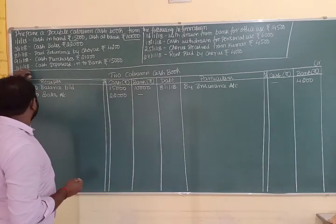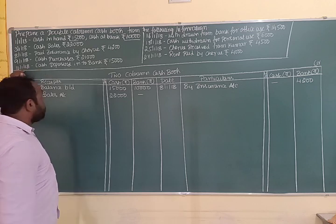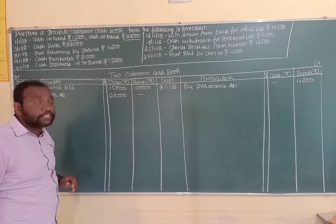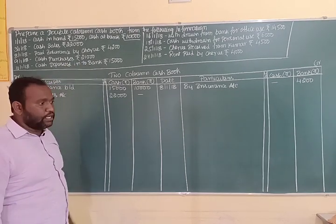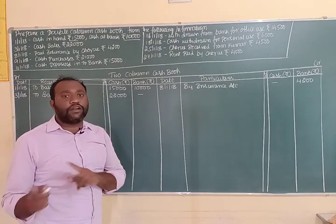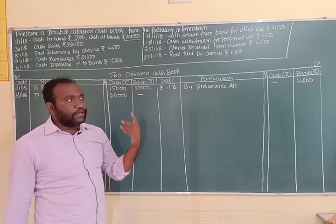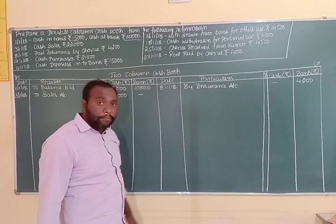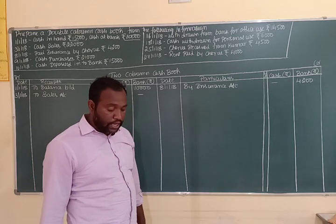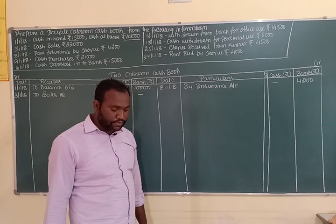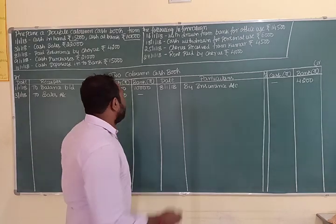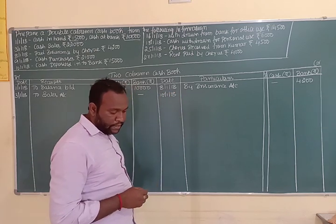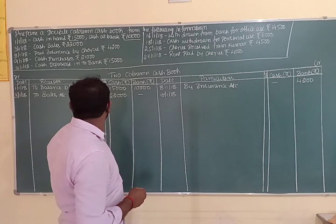On 9th January 2018, cash purchases rupees 21,000. The journal entry will be: purchases account debit to cash account. We record 'By Purchases Account' on the credit side, entering 21,000 in the cash column.